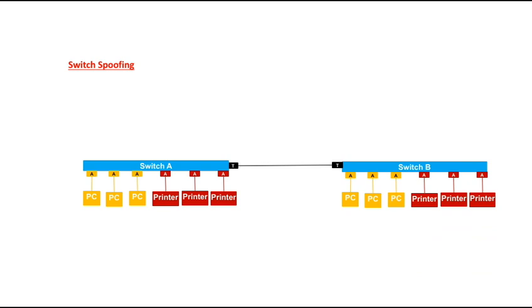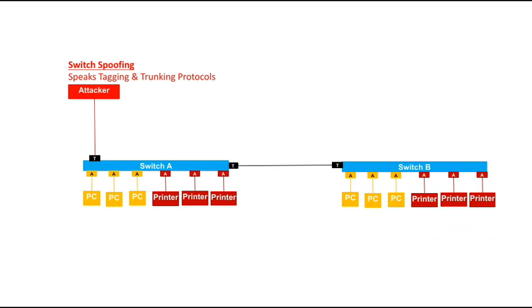The first technique is switch spoofing. In this technique, the attacker takes advantage of a protocol known as Dynamic Trunking Protocol, or DTP, also known as auto trunking. DTP is a proprietary protocol of Cisco. With DTP, any port on a switch can be configured as a trunk port. So if the attacker can pretend that his system is a switch, he can convert any port on switch A into a trunk port if DTP is enabled on switch A. In this way, the attacker can access all the VLANs on switch A.